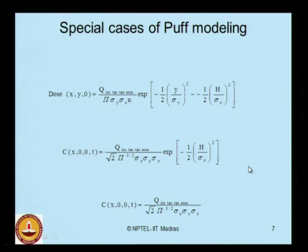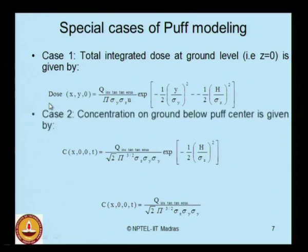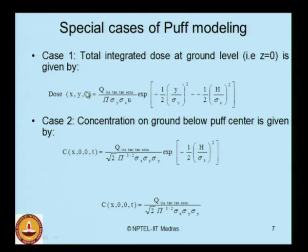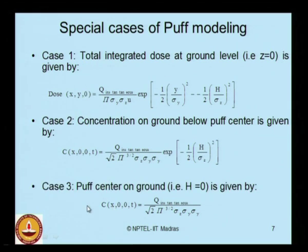There are special cases of puff modeling. Case 1 is the total integrated dose at ground level, where z is taken as 0, giving the dosage at ground level as the total dosage of dispersion. Case 2 is concentration on the ground below the puff center at any instantaneous time t. Case 3 is puff center on the ground, where h is taken as 0 at any instantaneous time t.